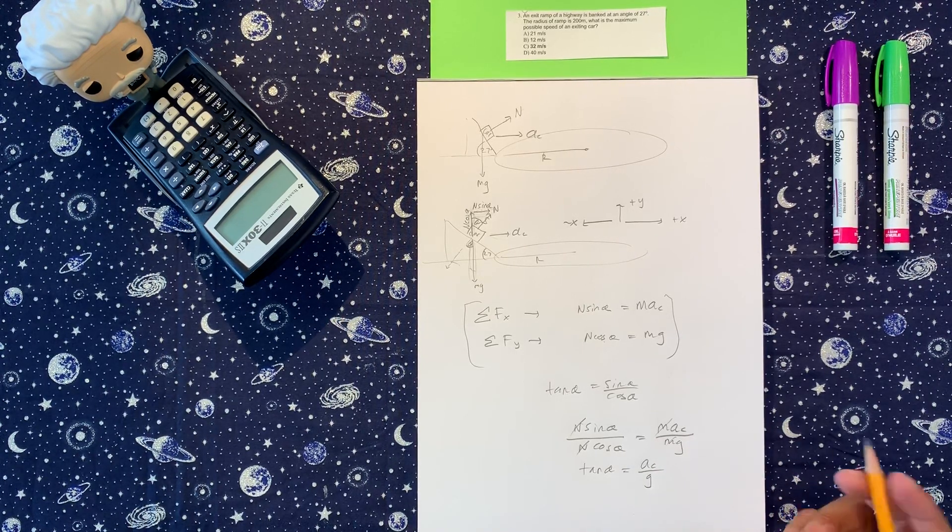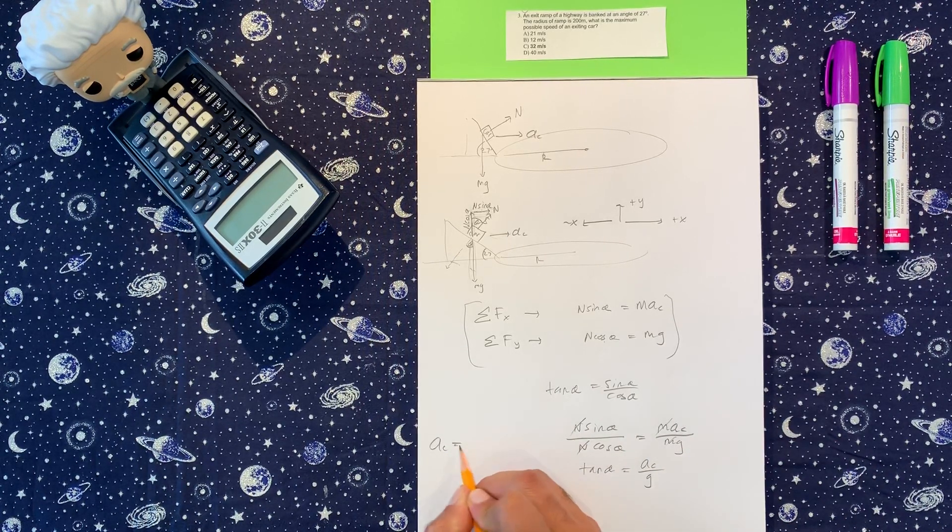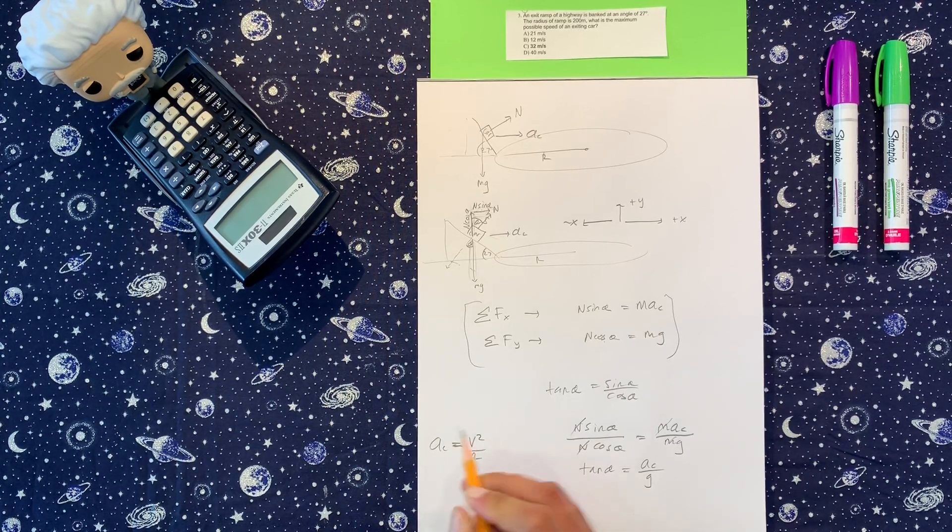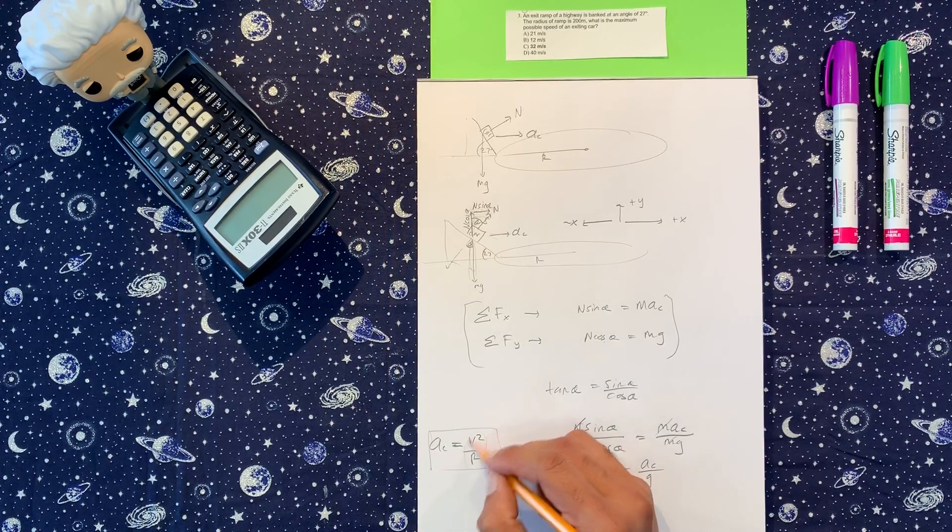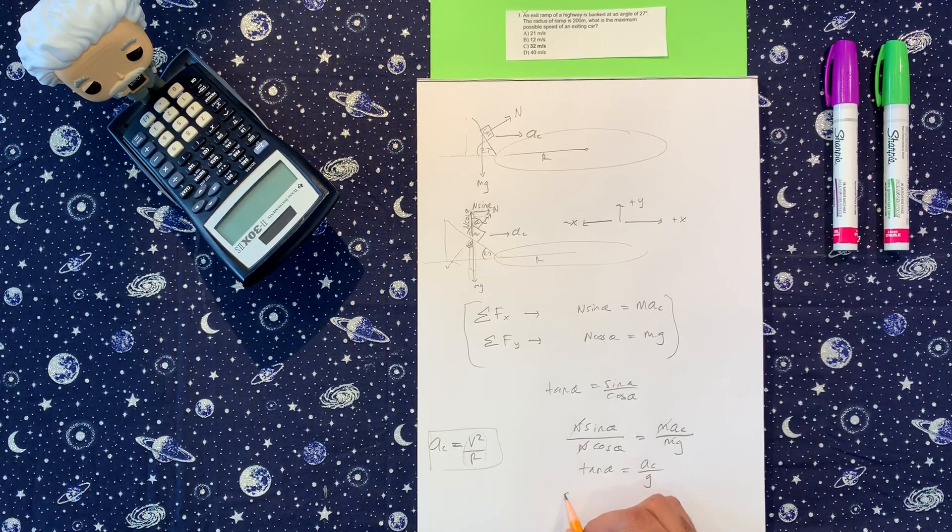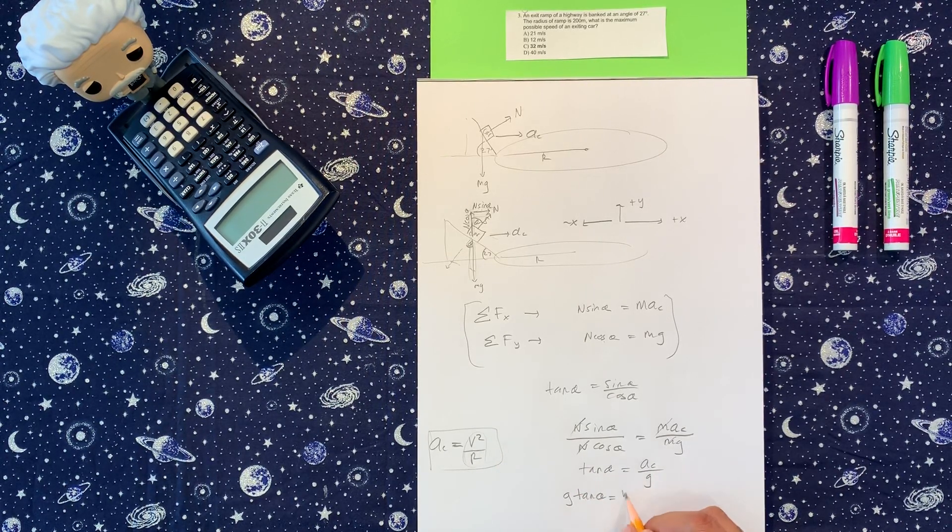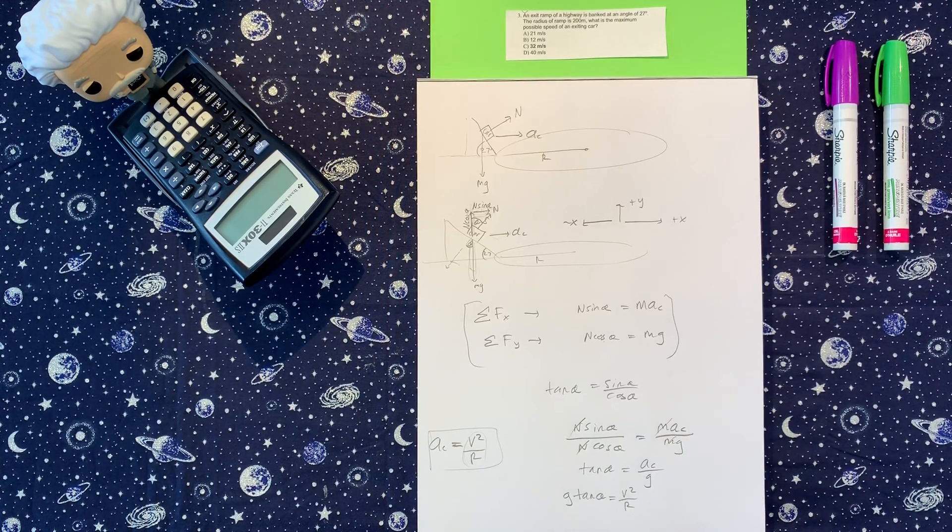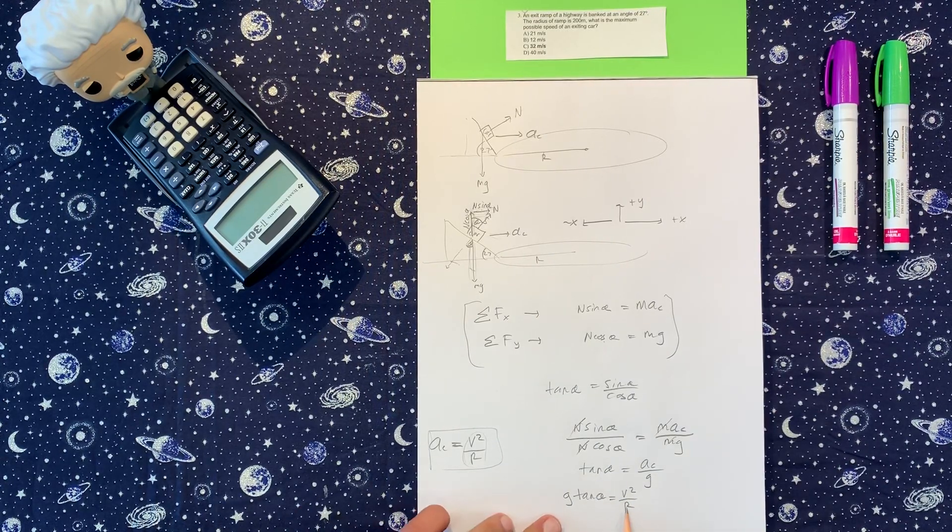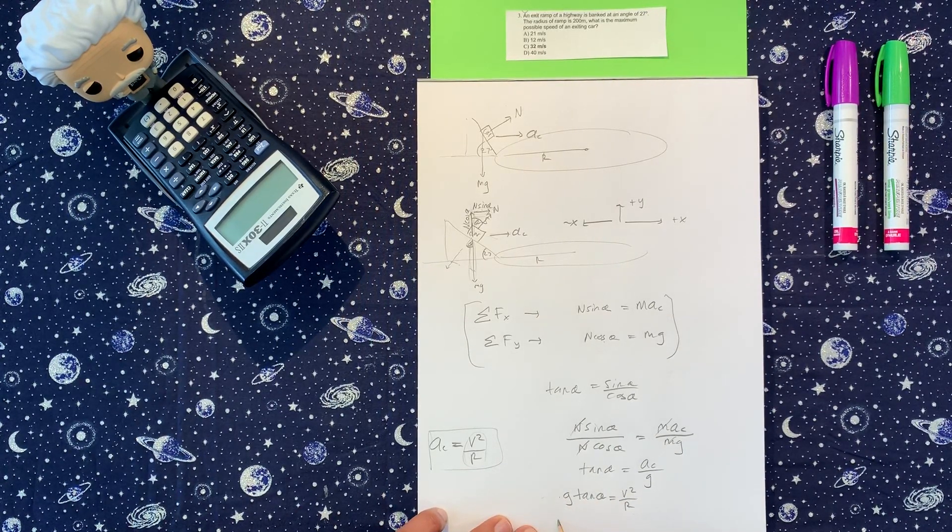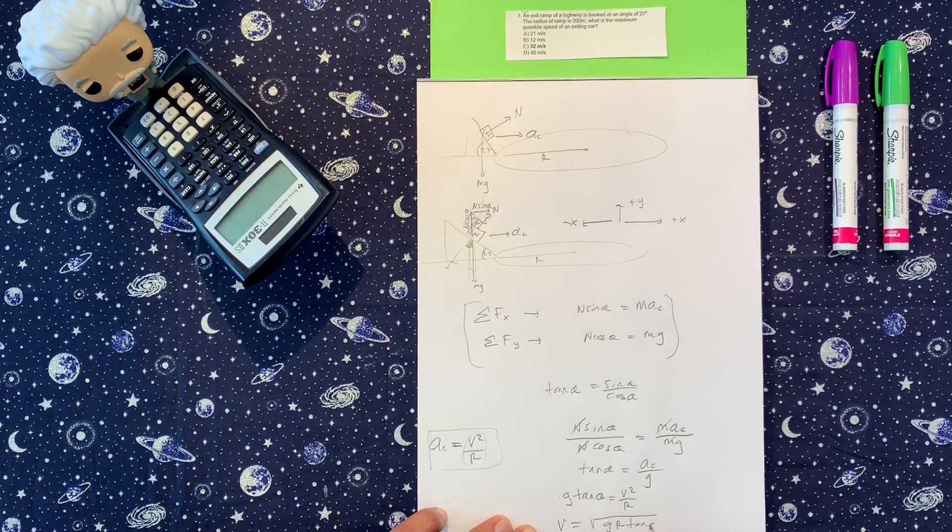We've got one more trick. Centripetal acceleration is equal to v squared over r. We need to know that formula. So we change this into v squared over r. I'm going to put the g on the other side first, g tangent theta. Now this is alone, so I'm going to write v squared over r. We're looking for the maximum speed, so v. I'm going to put the r on this side, square root of everything. So v is equal to square root of g r tangent theta.